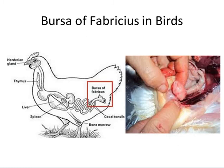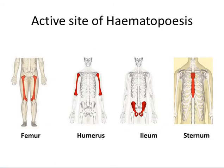In humans, the bone marrow is the primary lymphoid organ that supports self-renewal and differentiation of hematopoietic stem cells into mature blood cells. Although all bones contain marrow, the long bones — femur, humerus — and hip bones like the ilium and sternum tend to be the most active sites of hematopoiesis.